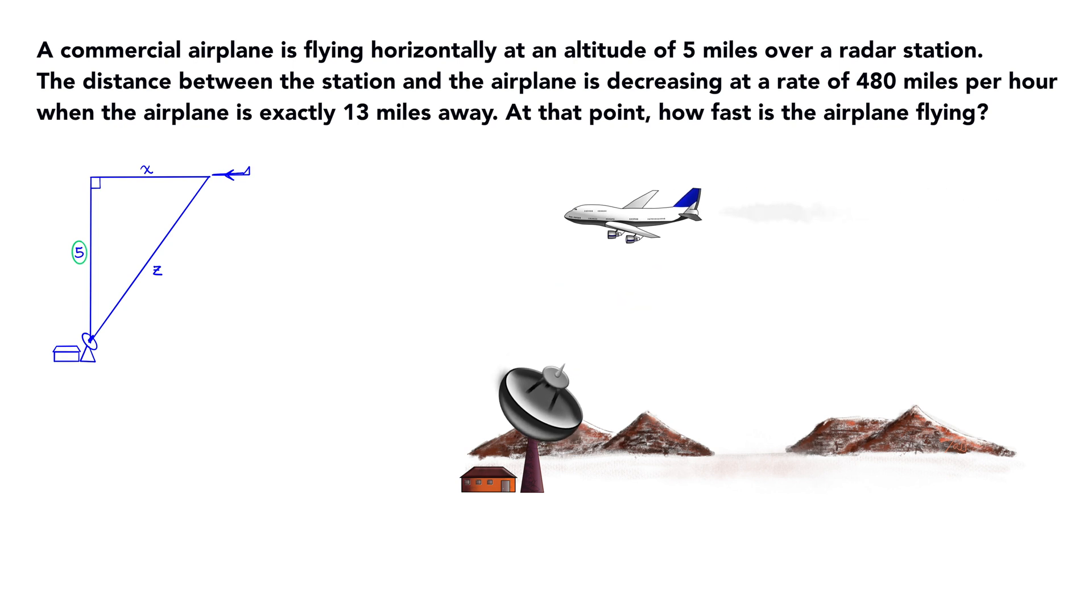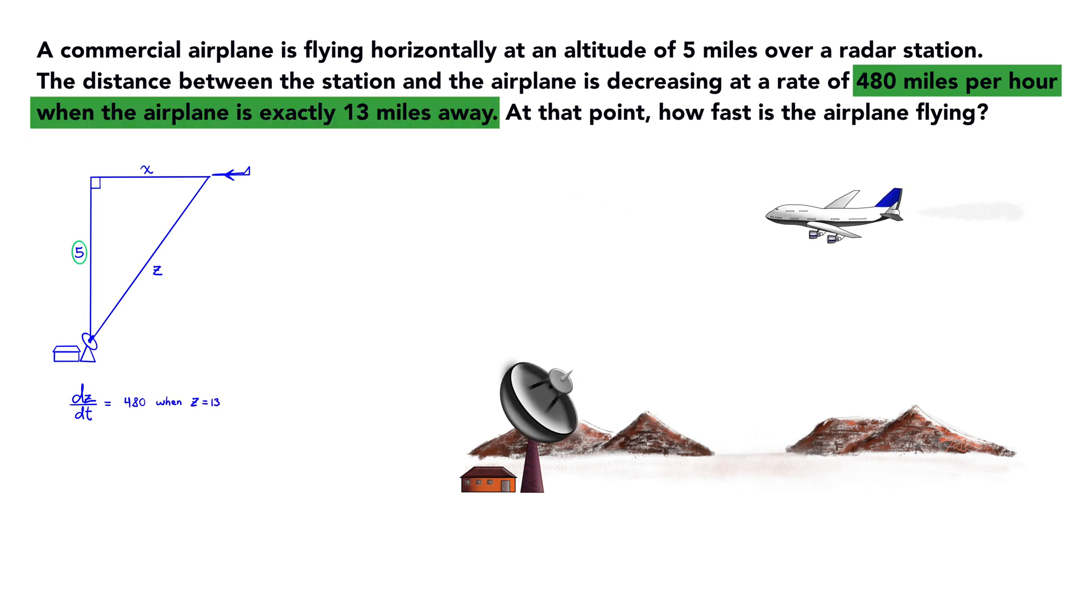Now, let's identify everything for writing. The known rate of change of the distance z with respect to time, dz over dt is 480 miles per hour, when z equals 13 miles.